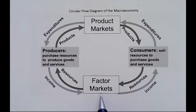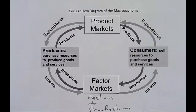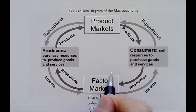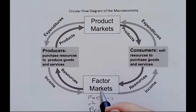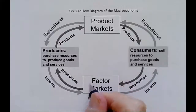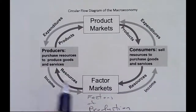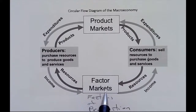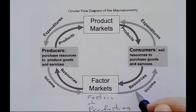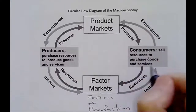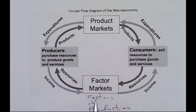Down here we have our factor markets — these are our resources, our factors of production. Resources flow from the consumer sector; that would be you and I going to work, people renting land out, and so forth. In the factor markets, that is where microeconomics takes place. Microeconomics uses supply and demand to determine the prices of labor, capital, and land. Those resources are purchased by the producers, and income flows out of the producers as they pay for these resources. The markets determine each resource's share of that income, and the income flows into your bank accounts. Down here is the supply side of the economy — where production and supply take place.